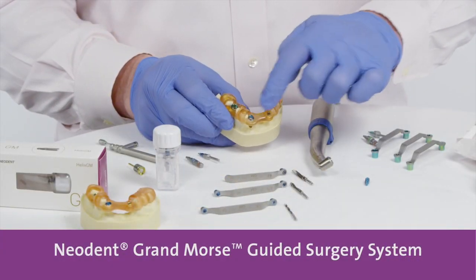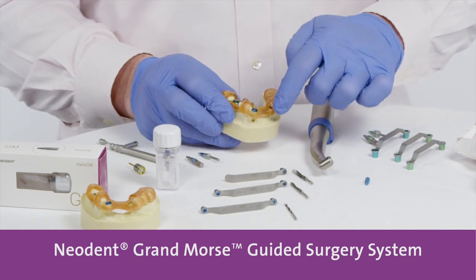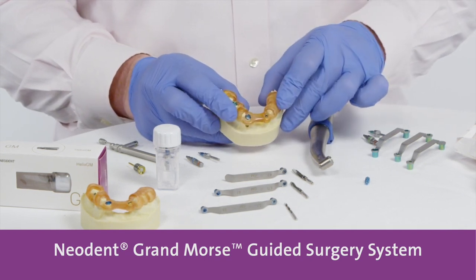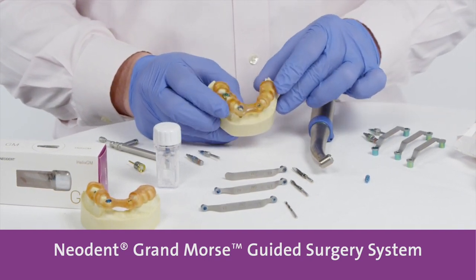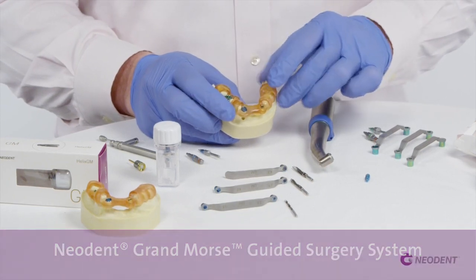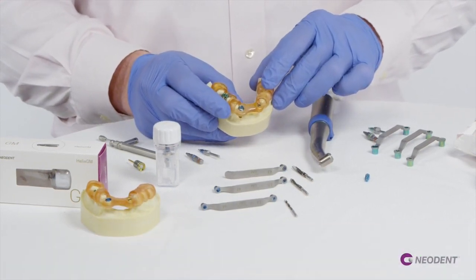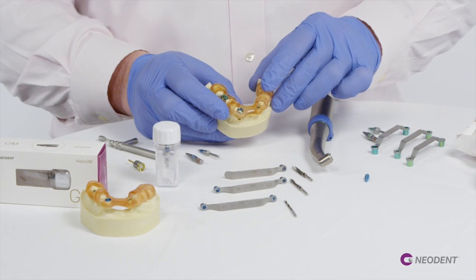We have a series of sleeves that are placed or glued into this guide when it's created, and they are color-coded. If we have a narrow or magenta sleeve, it will only place a 3.5 diameter implant.